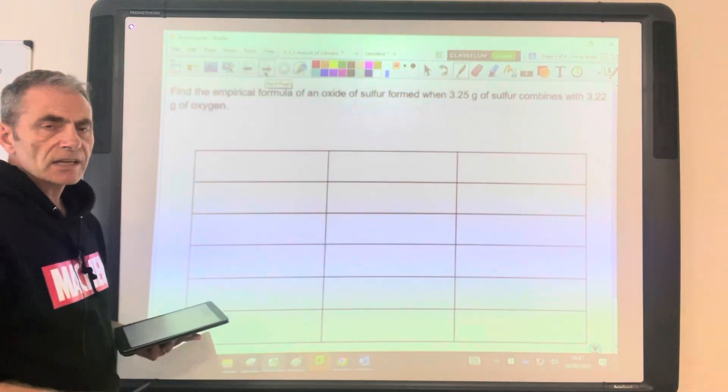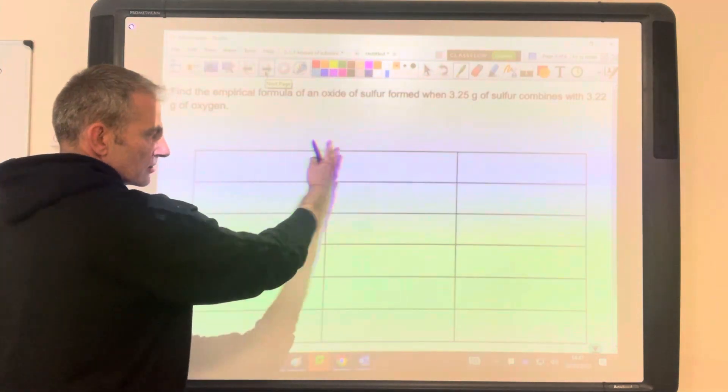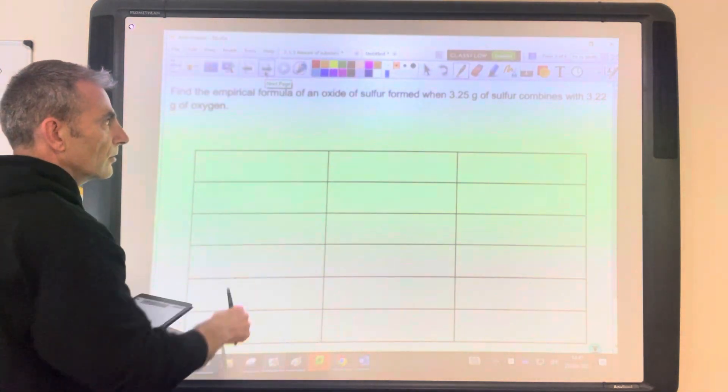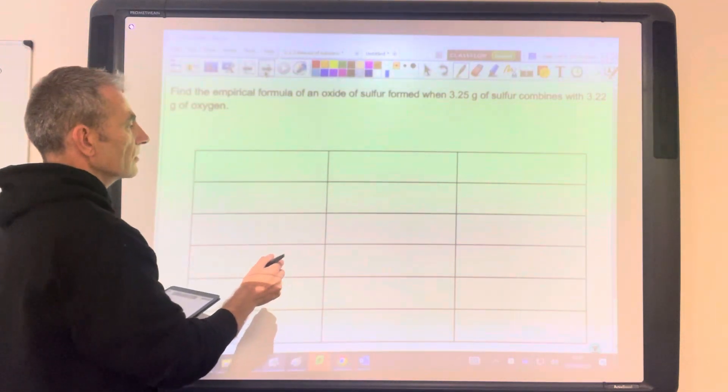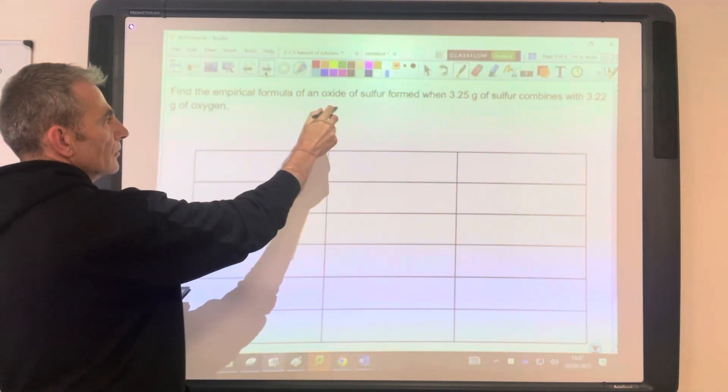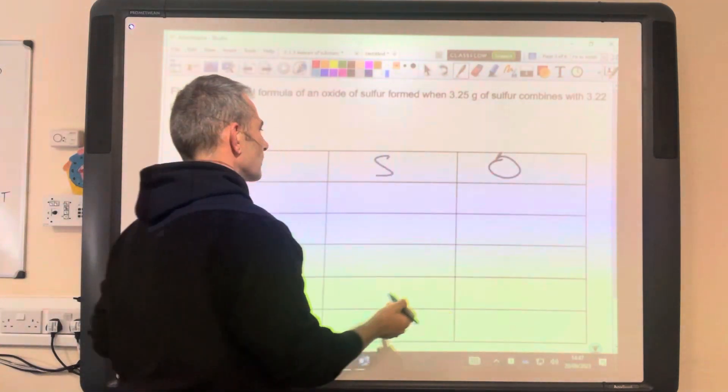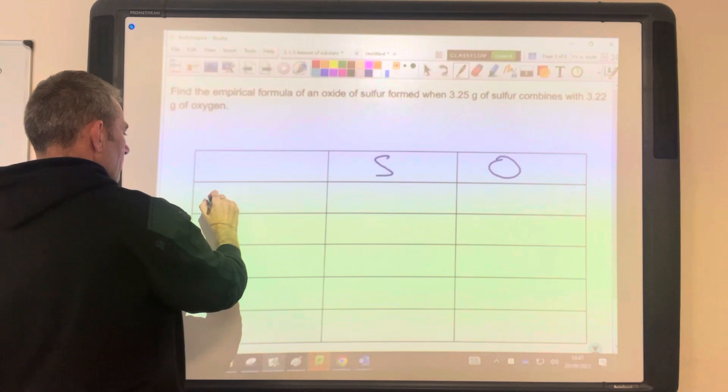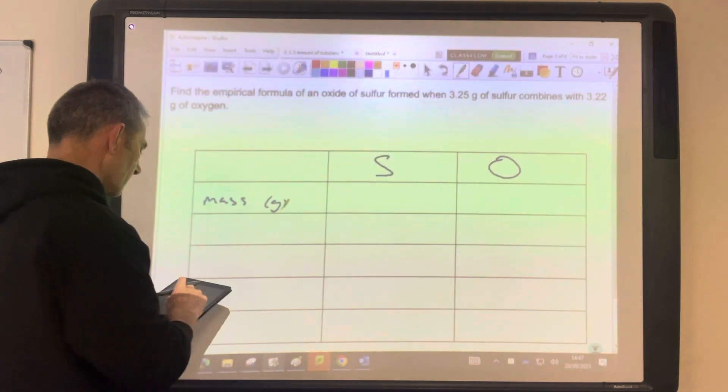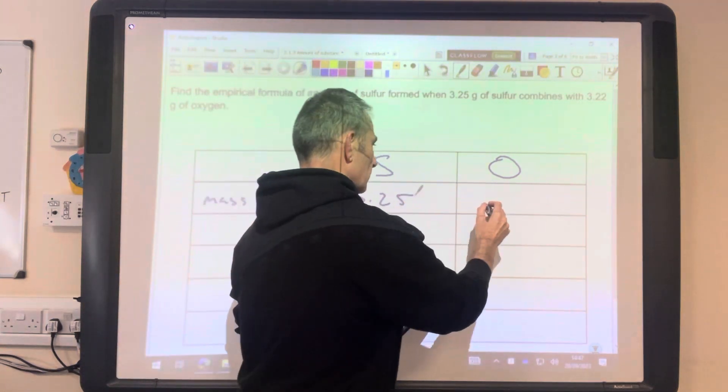So how do you calculate empirical formula? I've got this grid to help my students as they're starting out. You don't need it eventually, but we'll start with it. So the first thing we'll do is put in the atoms involved in the compound. So this is sulfur and oxygen, so S and O. And the first thing we'll write in is the mass in grams. So this first row is for mass. So it's 3.25 and 3.22.